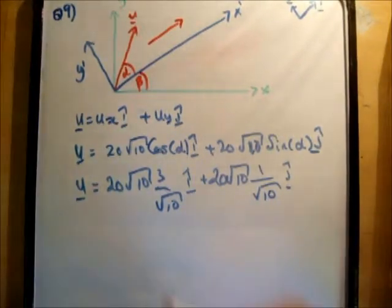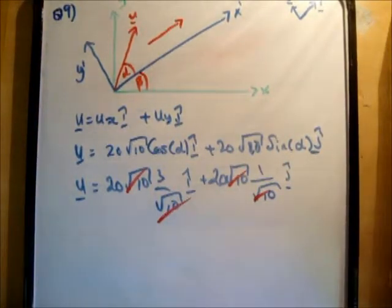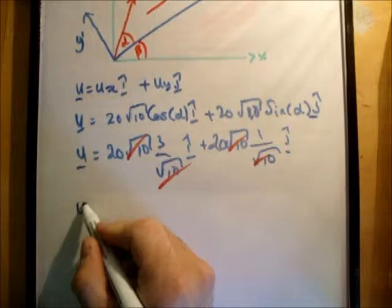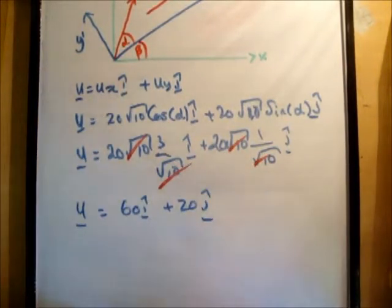So let's just do a bit of canceling here, cancel those, cancel those, cancel those, and we get that u, the velocity vector, the initial velocity vector, is equal to 60 i hat plus 20 j hat. Alright. That's pretty good.